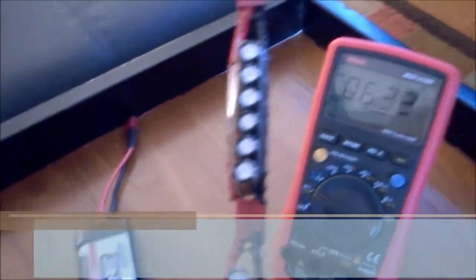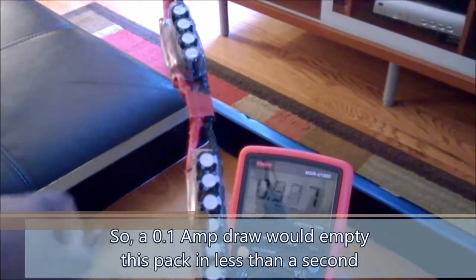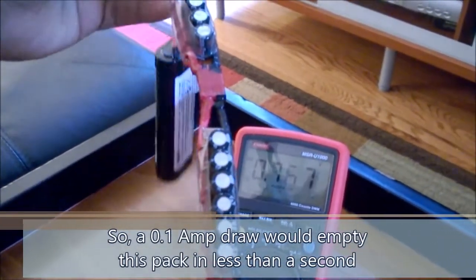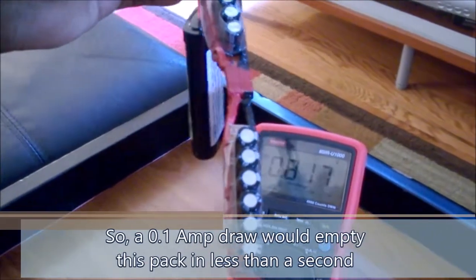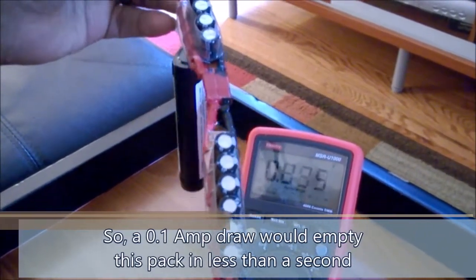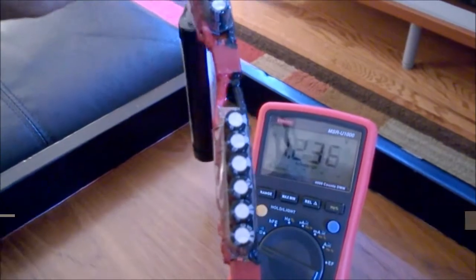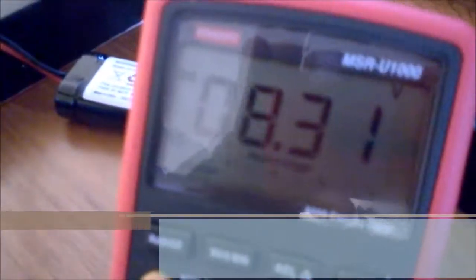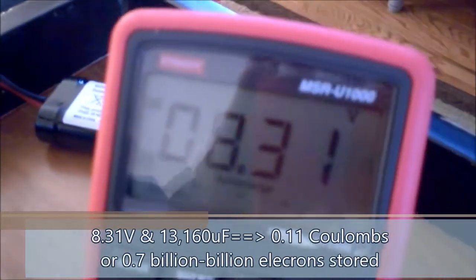I'm going to plug this Dean's connector in and watch what happens to the numbers on the meter. You see the multimeter is going up to 8.3 volts, and in real time it's 8.31.